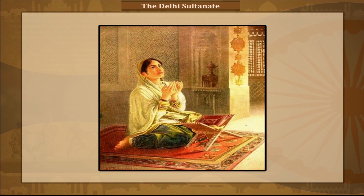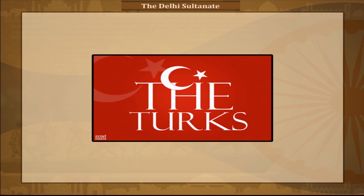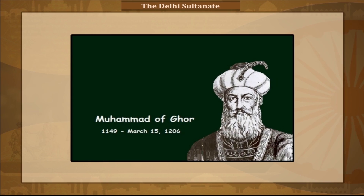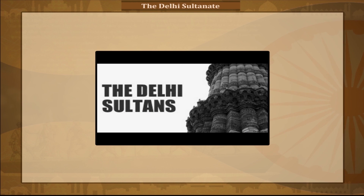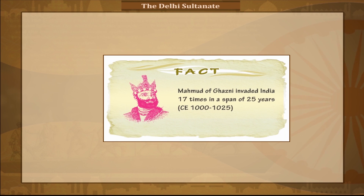The power and glory of the Arabs slowly faded with the coming of the Turks in India. The two most prominent Turkish invaders were Mehmood of Ghazni (1000–1026) and Mohamed Ghori (1175–1206), which led to the weakening of indigenous Indian rule and the establishment of the Delhi Sultanate, beginning with a Mamluk slave named Qutub Uddin Aibak. Notably, Mehmood of Ghazni invaded India 17 times in a span of 25 years, from CE 1000 to CE 1025.